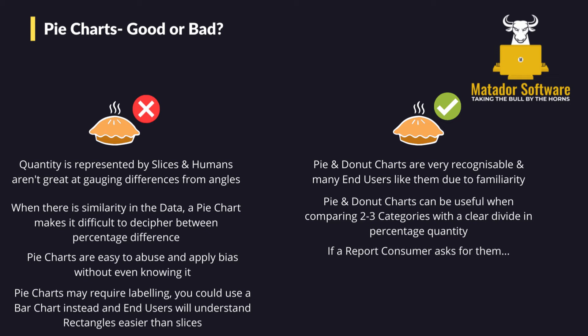However, in the case for pie charts, pie and donut charts are very recognizable. Many end users like them due to familiarity. I did see a good quote where someone said they're not going to die on a hill over a paycheck regarding pie charts. So sometimes, even though it may not be the most visually correct thing to use, sometimes it's what people want, and you can enable that with a bit of advice or pushback. They can be useful when comparing two to three categories, especially if there's a clear divide in percentage quantity. And if a report consumer asks for them, you can advise on maybe alternatives, but at the end of the day, if they want it, you can find the best way to incorporate it in your report or dashboard.